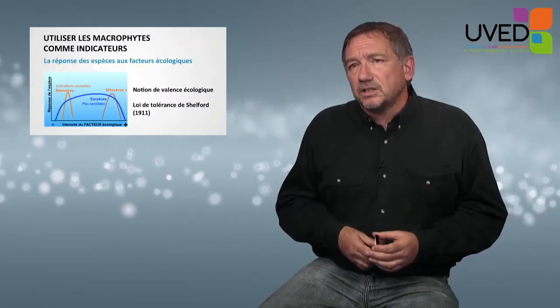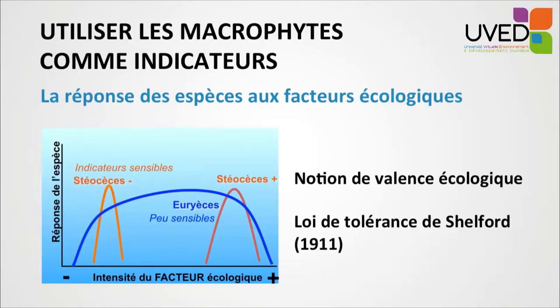How can they be used as indicators? For this we need to revisit basic ecology — the response of species to ecological factors in the environment. This is the notion of ecological valency, described at the beginning of the 20th century. For a given ecological factor such as temperature, ammonium content, or mineralization, some species respond only for very specific values of the gradient — either low or very high values. These are stenoecious species and are very sensitive indicators.